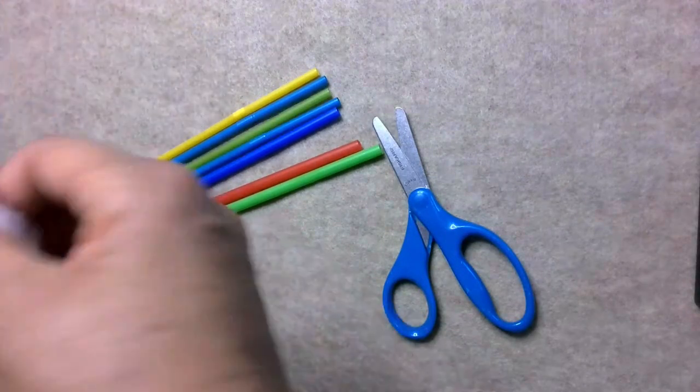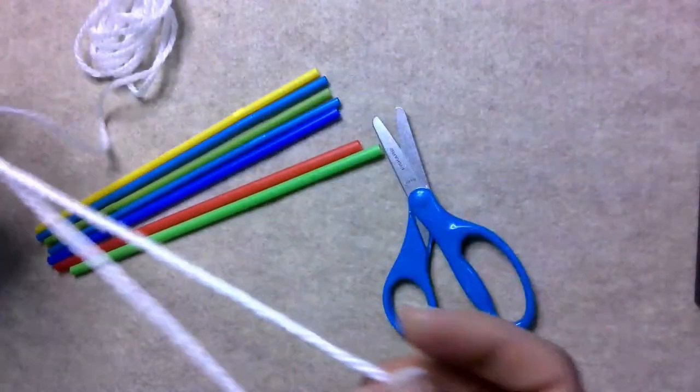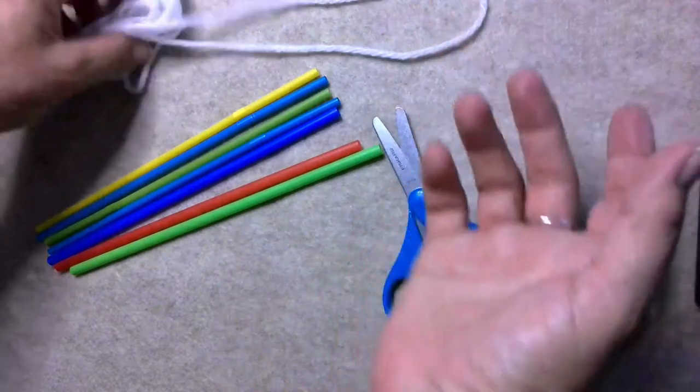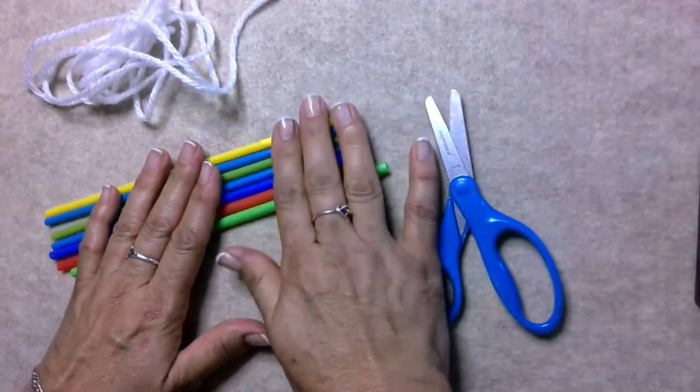You can measure your little ones around the neck and then cut the piece of string that you're going to need, or you don't have to. You can just make a very long string and then cut it into smaller pieces.